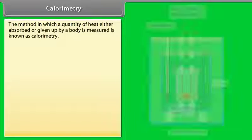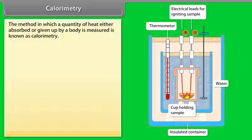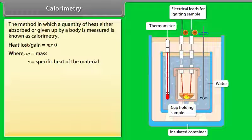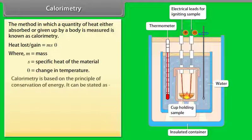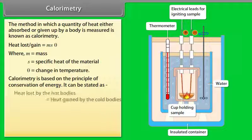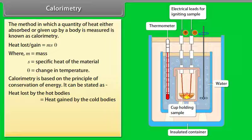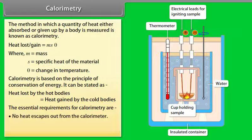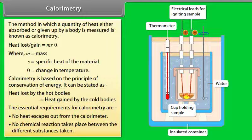Calorimetry is the method in which the quantity of heat absorbed or given up by a body is measured. Heat loss or gain = MSθ, where M is mass, S is specific heat, and θ is change in temperature. Calorimetry is based on the principle of conservation of energy: heat lost by hot bodies equals heat gained by cold bodies. Essential requirements: no heat escapes from the calorimeter and no chemical reactions occur between substances.